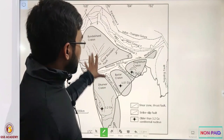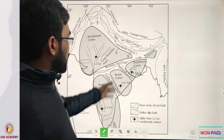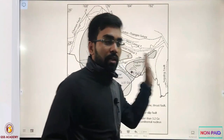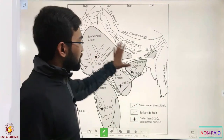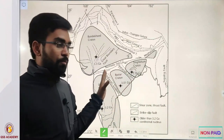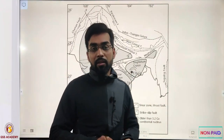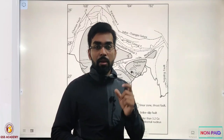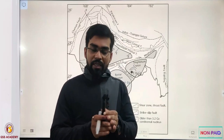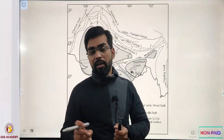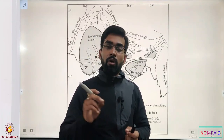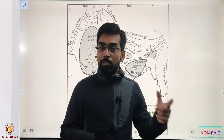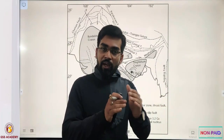This tectonic division of the Indian subcontinent shows the major cratons in Peninsular India. In the southern part is the Dharwar craton, in the eastern part is the Singhbhum craton, there is the Bastar craton, and in the middle of India is the Bundelkhand craton. You may wonder why we didn't mention the Aravalli craton, which we all study about.